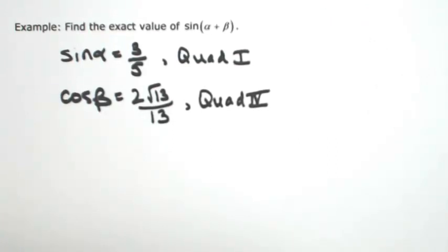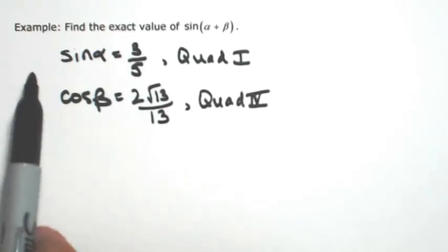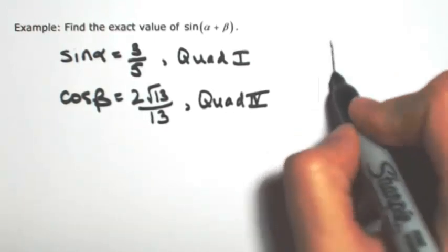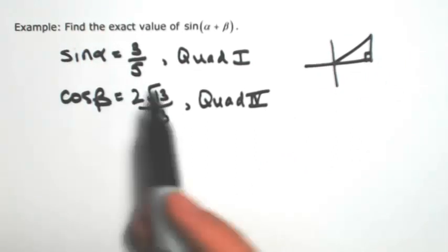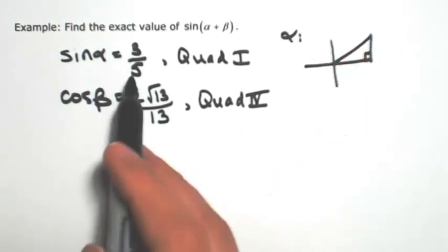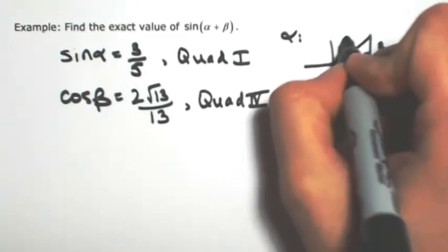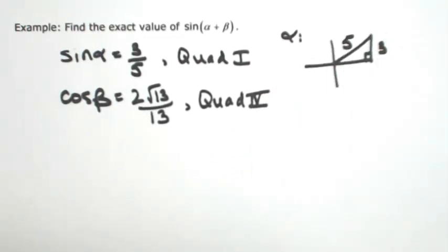What I'm going to do is draw the picture that each of these given information represents. So in quadrant one, I'm going to draw a triangle whose sine, so this is for alpha, is three-fifths. So opposite over hypotenuse. And I'm sure you can tell that the missing side is four.